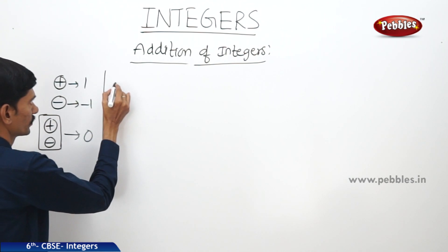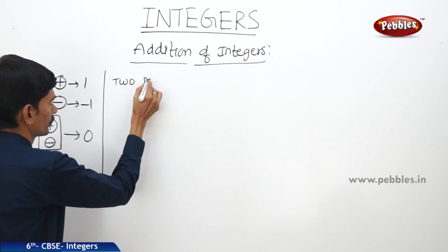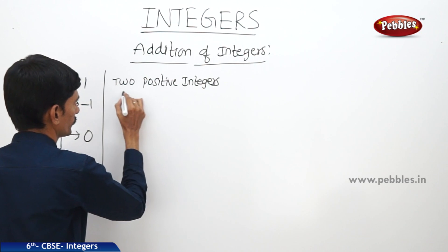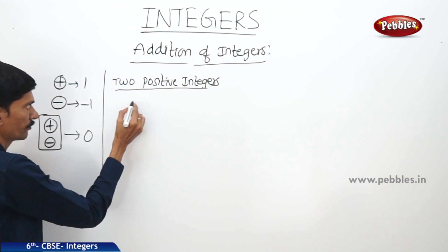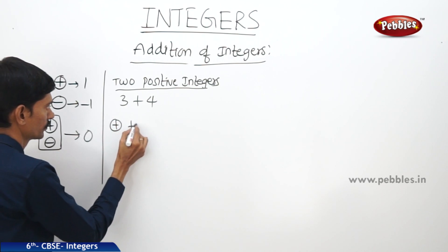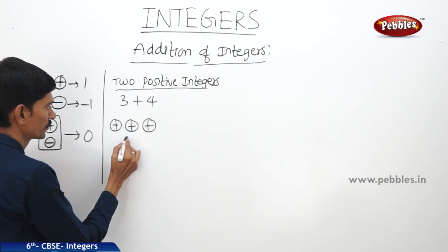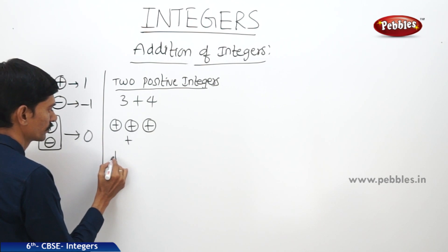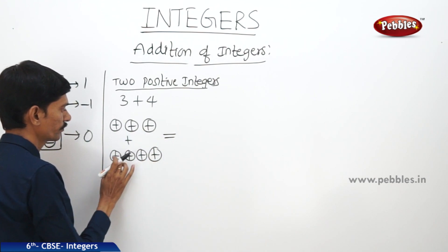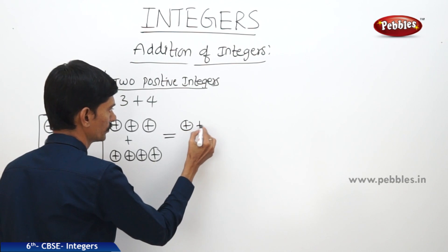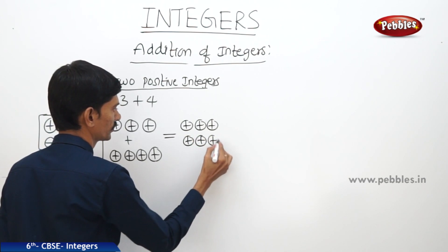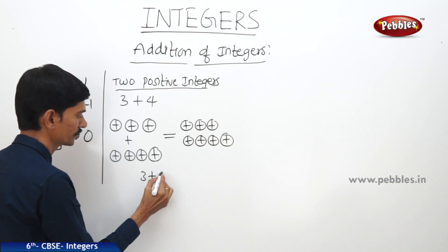First we will take two positive integers. For example, if you want to add 3 plus 4, we will take 3 plus signs, and then again 4 plus signs. So then we count all of them: 1, 2, 3, 4, 5, 6, 7. We observe that 3 plus 4 equals 7.